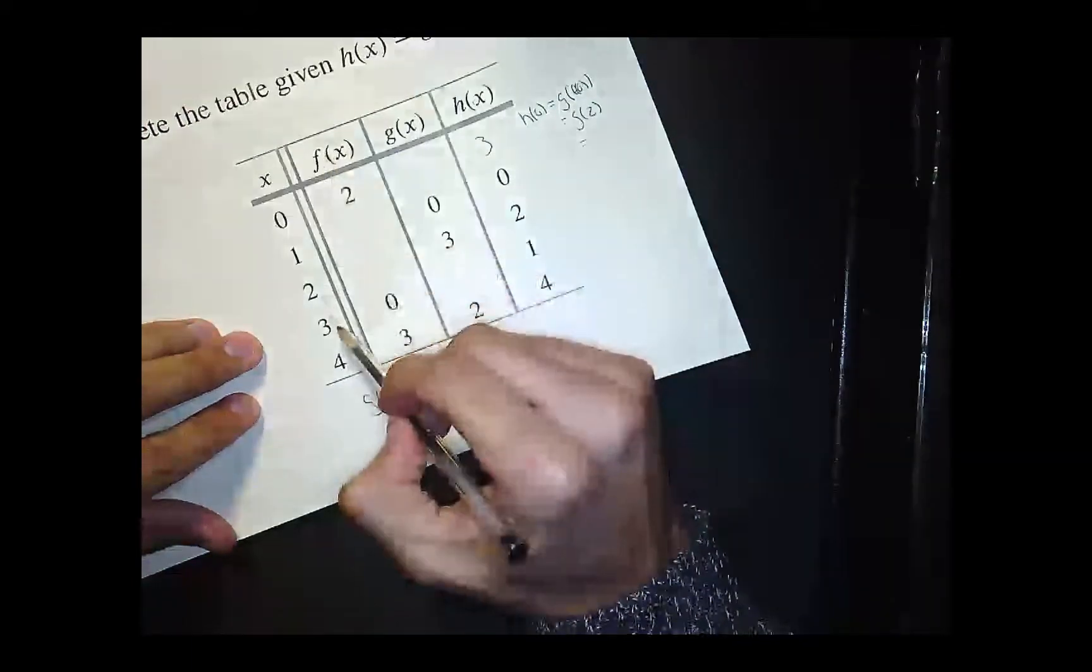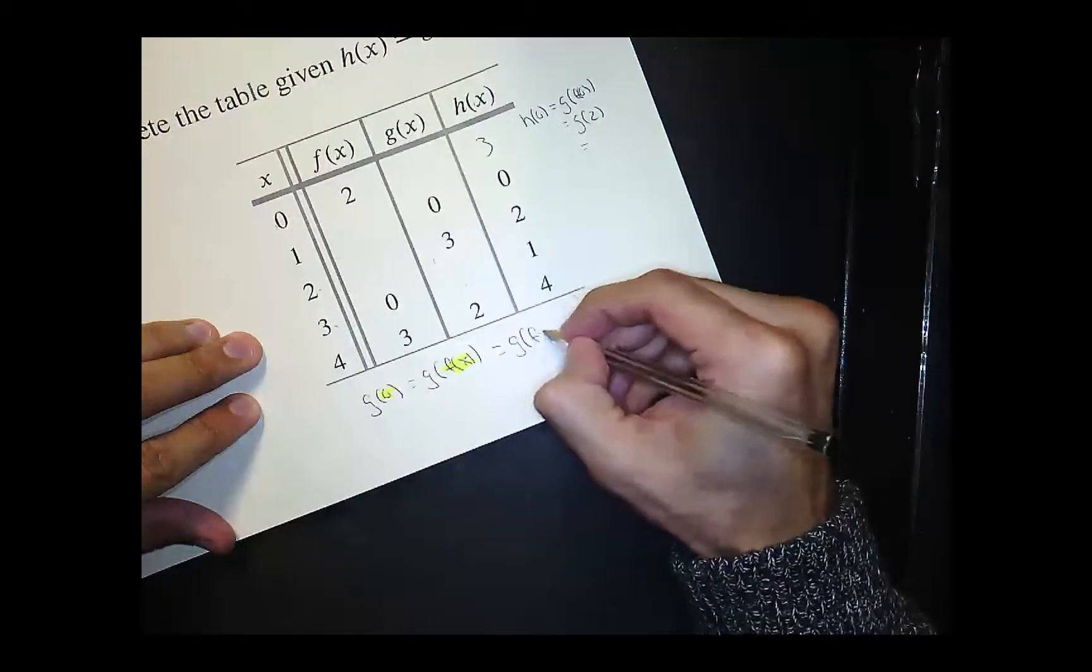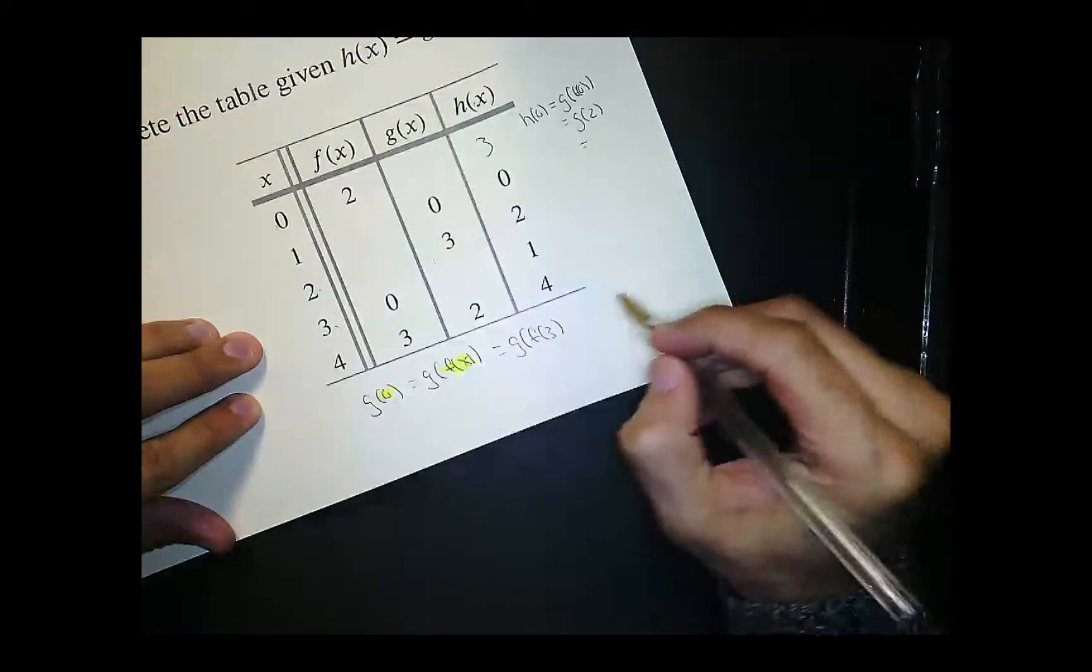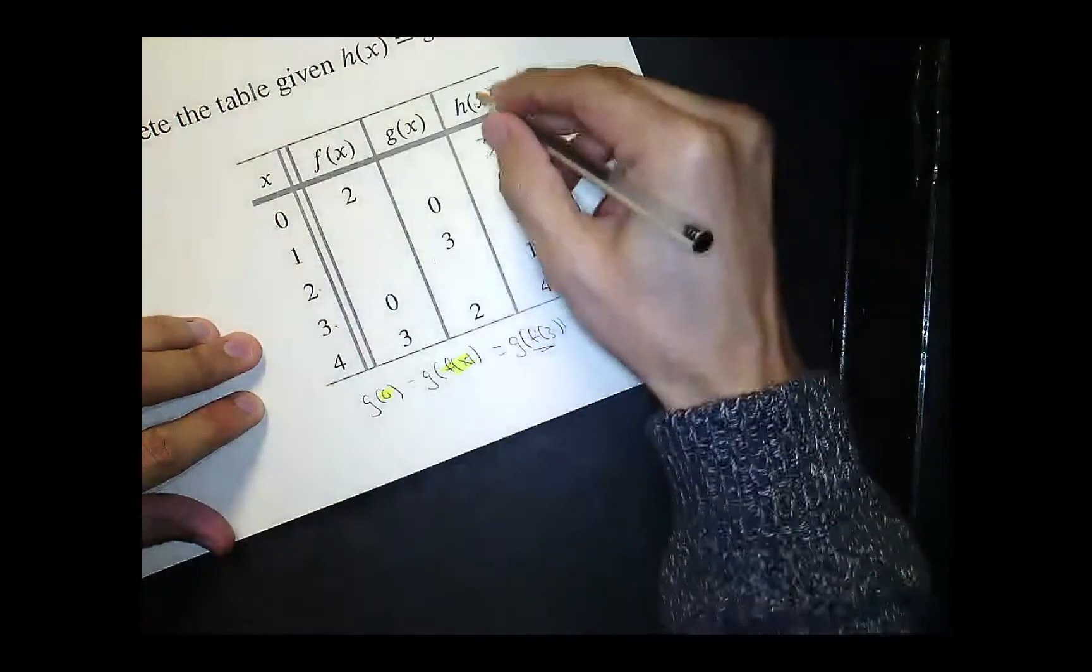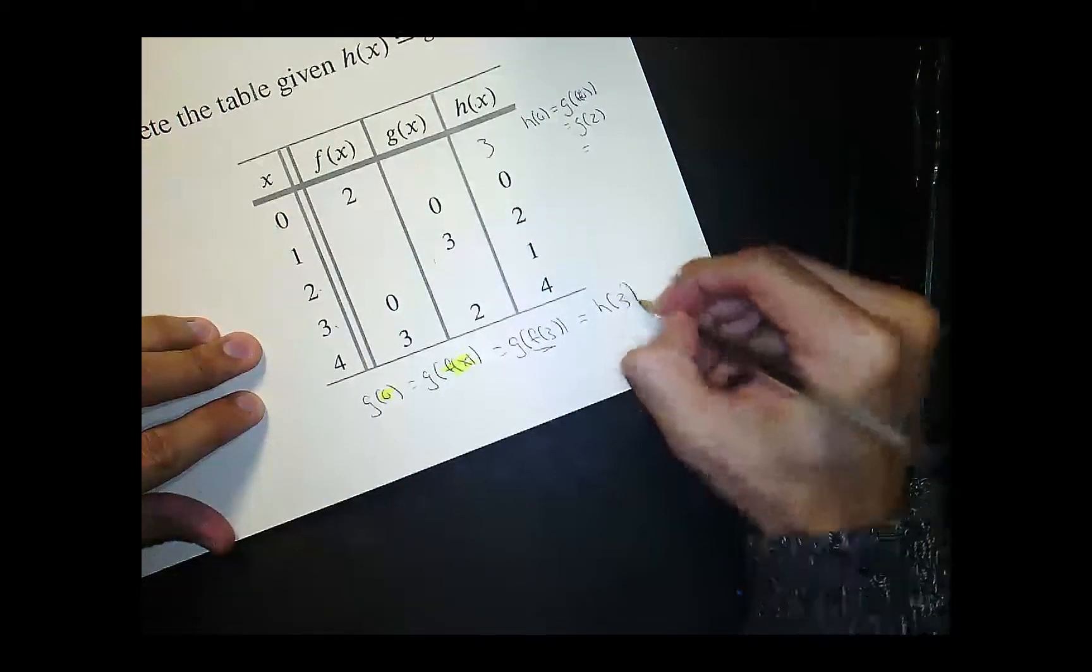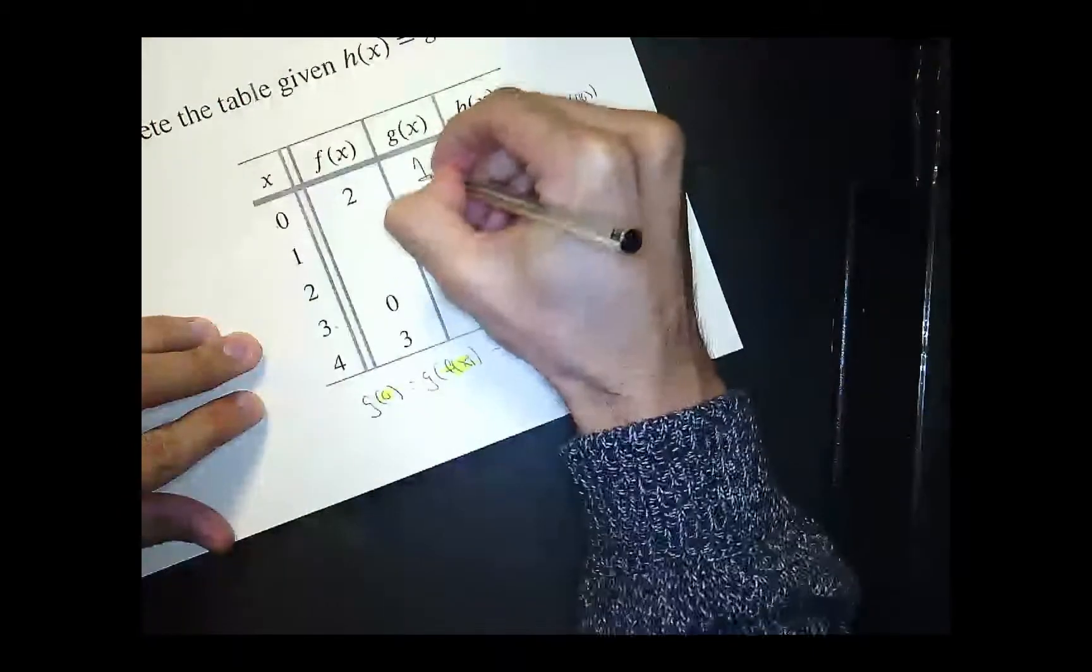Well, f of x equals 0 when x equals 3. So I can write this as g of f of 3. And again, right, keep in mind that this is like saying h of 3. Well, what is h of 3? h of 3 is 1. So then that means this is 1.